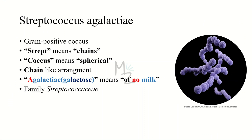Streptococcus agalactiae. It is a gram-positive coccus. The word 'strep' means chains and 'coccus' means spherical, so this bacterium has a chain-like arrangement. The second word is 'agalactiae' — whenever you see 'a' it means absent, so consider it as 'no.' 'Galactiae' is derived from galactose, and galactose and lactose are both found in milk. So 'agalactiae' means 'of no milk.'